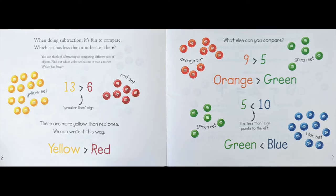There are more yellow than red ones. We can write it this way: yellow is greater than red. What else can you compare? 9 > 5, orange is greater than green. 5 < 10, the less than sign points to the left. Green is less than blue.